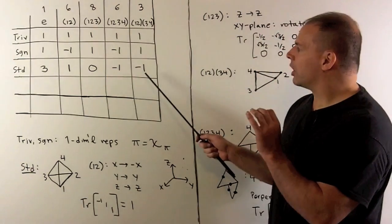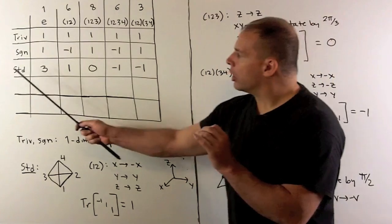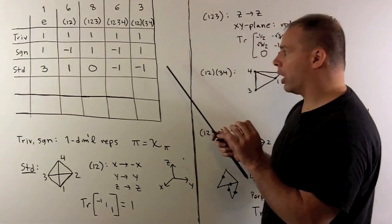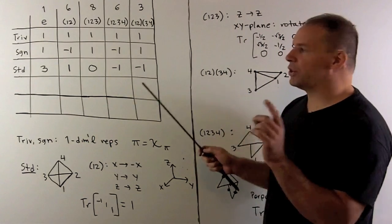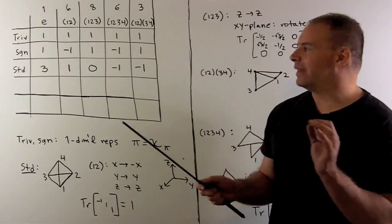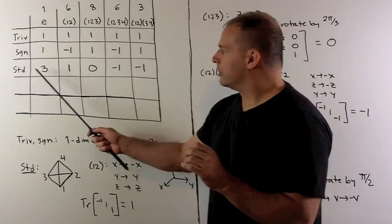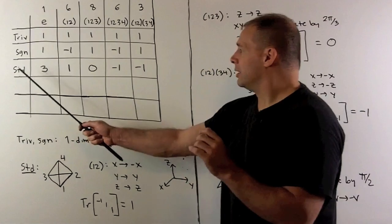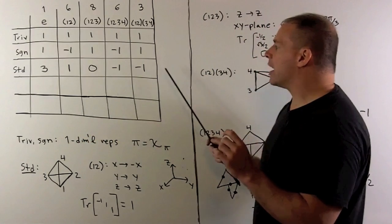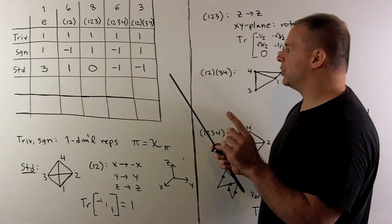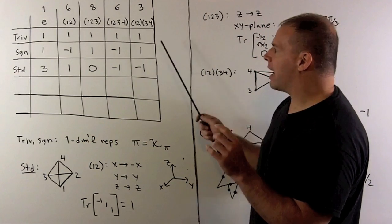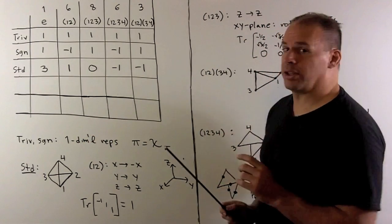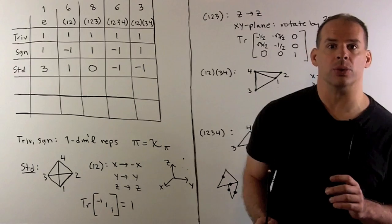That completes our third row. We leave it to you to check that the weighted sum of squares adds up to 24 and that we have orthogonality to the first two rows.